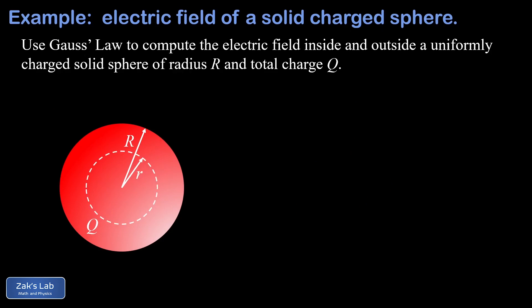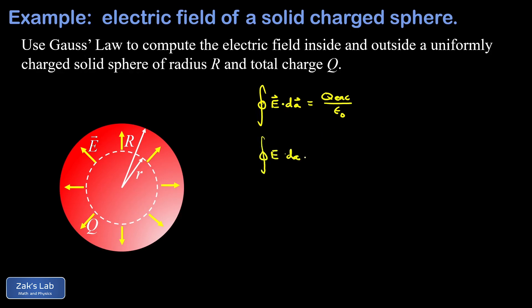Next, we look at a Gaussian surface contained within the uniformly charged sphere to find the electric field inside. This Gaussian surface again shares the same symmetry as the charge distribution, so E again has constant magnitude across it and is perpendicular to the surface at every point. Applying Gauss's Law, the flux integral simplifies the same way, giving us E times 4πr².